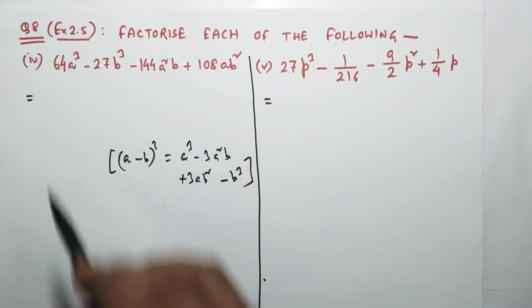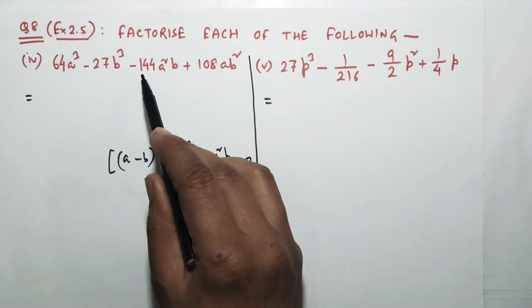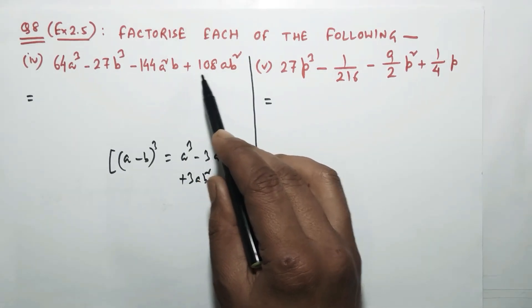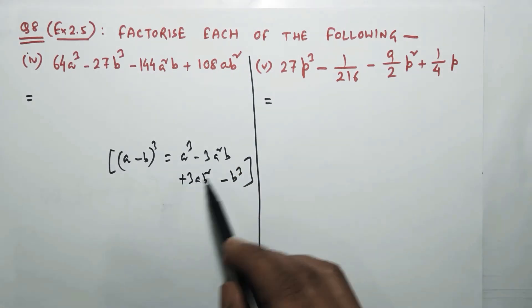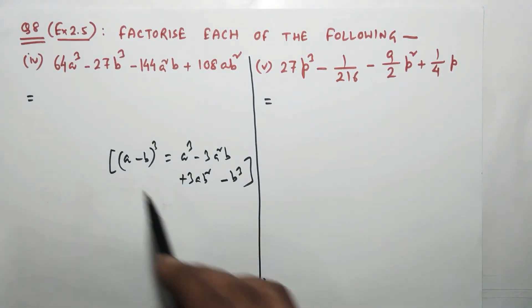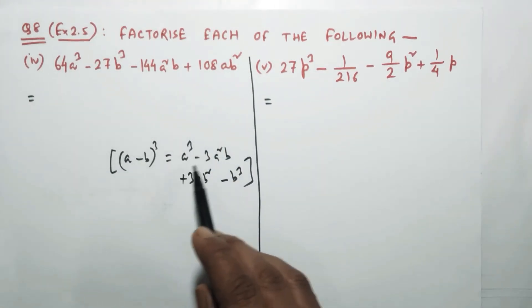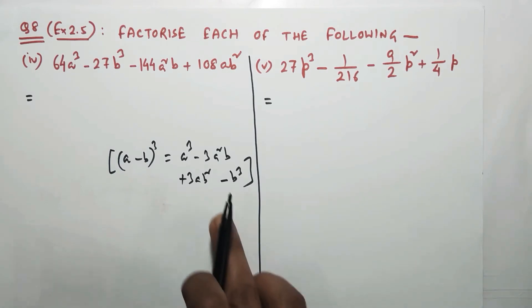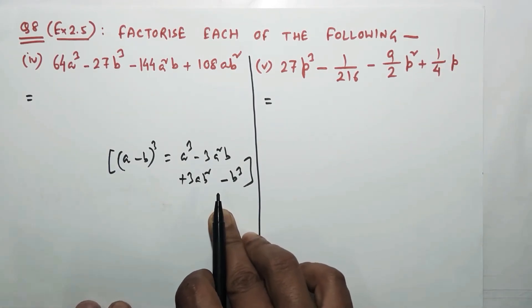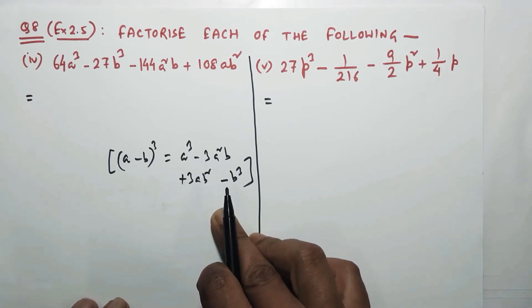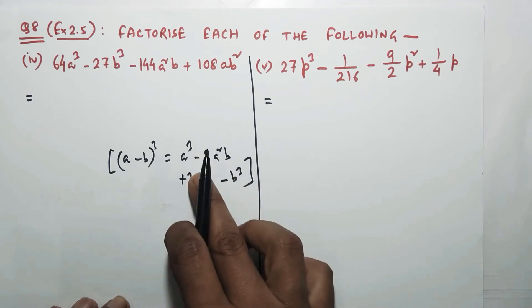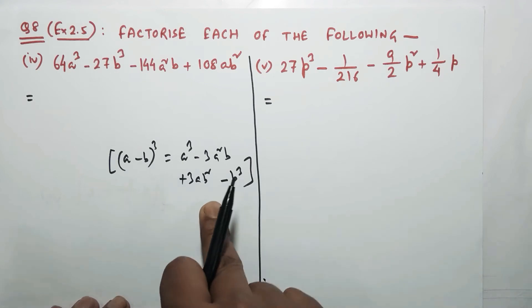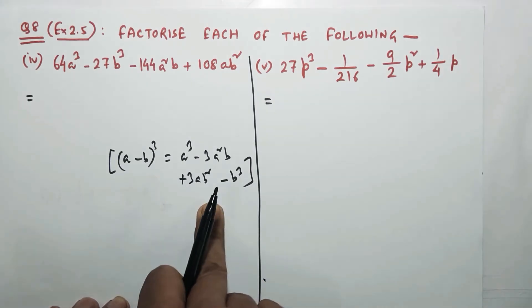...a³ - 3a²b + 3ab² - b³. Now comparing: we have a cube, minus b cube, minus a²b, plus 3ab² — all the algebraic parts are the same: a³, b³, a²b, ab². So this question falls in this particular identity. I'm trying to write all four terms in this form, similar to the right-hand side of the formula.